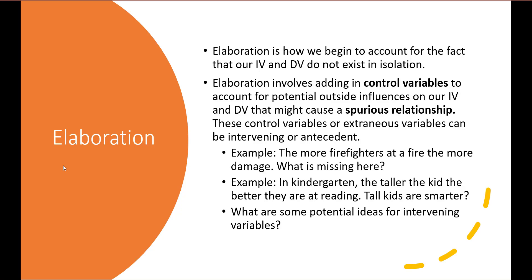Adding other variables to our analysis is known as elaboration. Elaboration accounts for the fact that the independent and dependent variable do not exist in isolation. Different places have different housing prices, different occupations have different incomes, different racial groups have different incomes, and people are born into different family statuses and wealth. Elaboration involves adding in extraneous variables to control them — called control variables. These control variables account for potential outside influences that might cause what we call a spurious relationship.